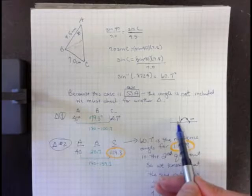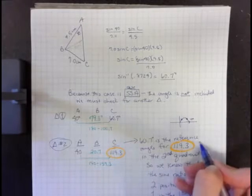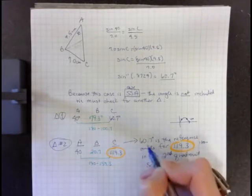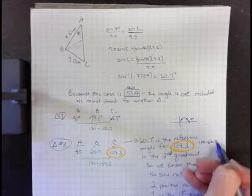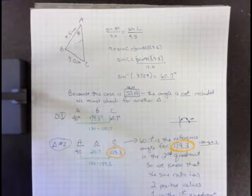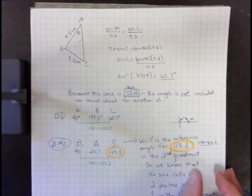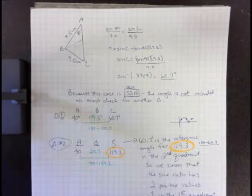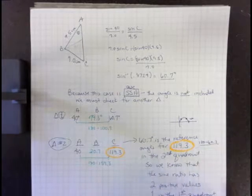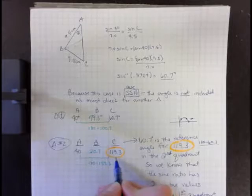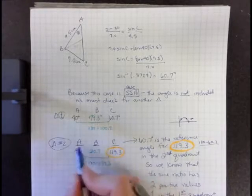What is that other angle measure? Well, if 60.7 is the reference angle, then in order to find the other angle that's in the second quadrant, we just do 180 minus the reference angle. Because we know that reference angles all have to be under 90 degrees, we get 119.3 degrees, and that is our C. So that's our new scenario.